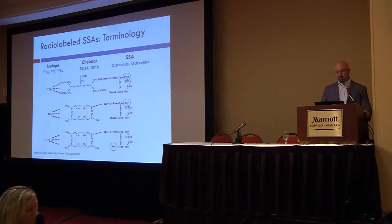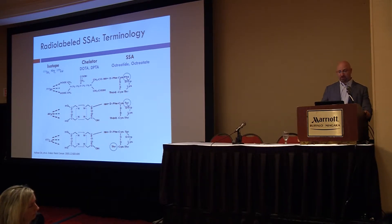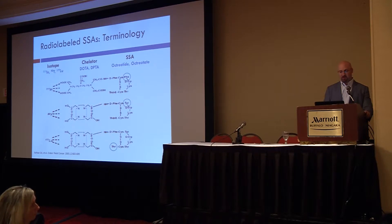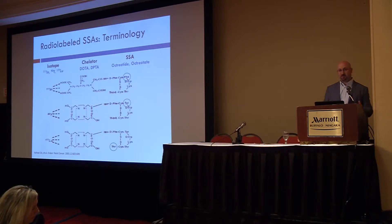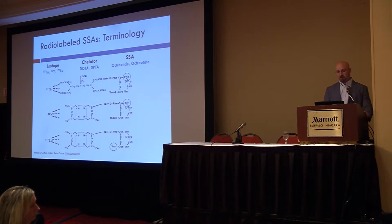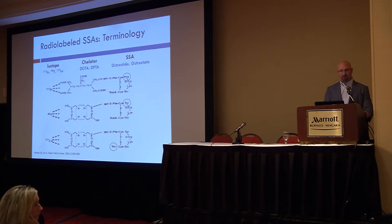Looking at response rates based on specific type of neuroendocrine tumor — starting with mid-gut, which is of course the small intestine and cecum, the most common type — response rates were roughly 30%. With pancreatic neuroendocrine tumors, even higher, about 50 to 55%. Hindgut, referring primarily to rectal tumors, was about 30%. So across the board, more or less 30 to 50% rates of significant tumor shrinkage, and an average time to tumor growth of roughly 20 to 30 months, or about two to two and a half years.